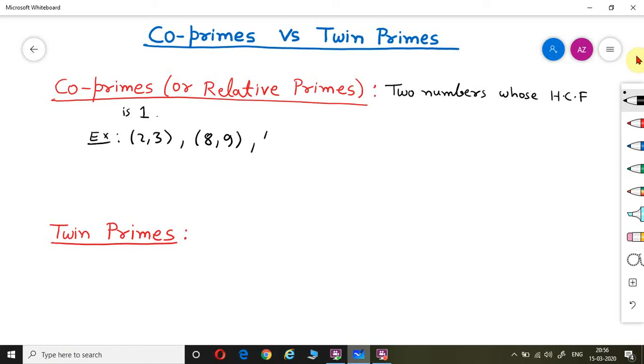We can take other examples as 17, 19. Here also if you see HCF will be 1. So these are examples of co-primes.